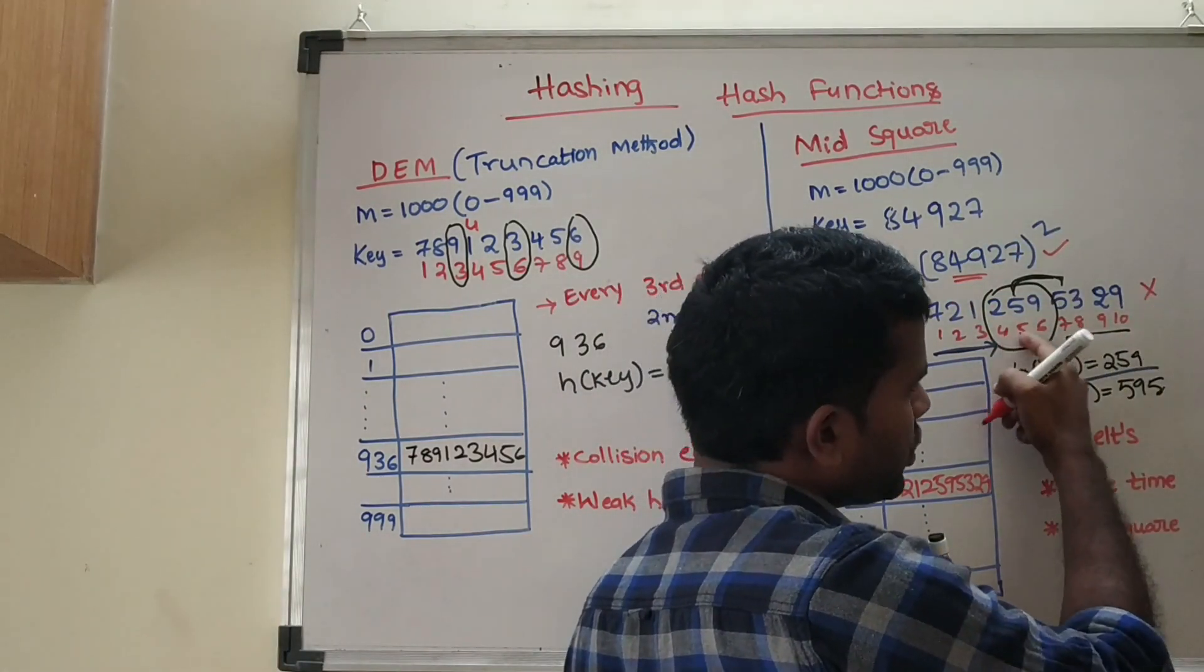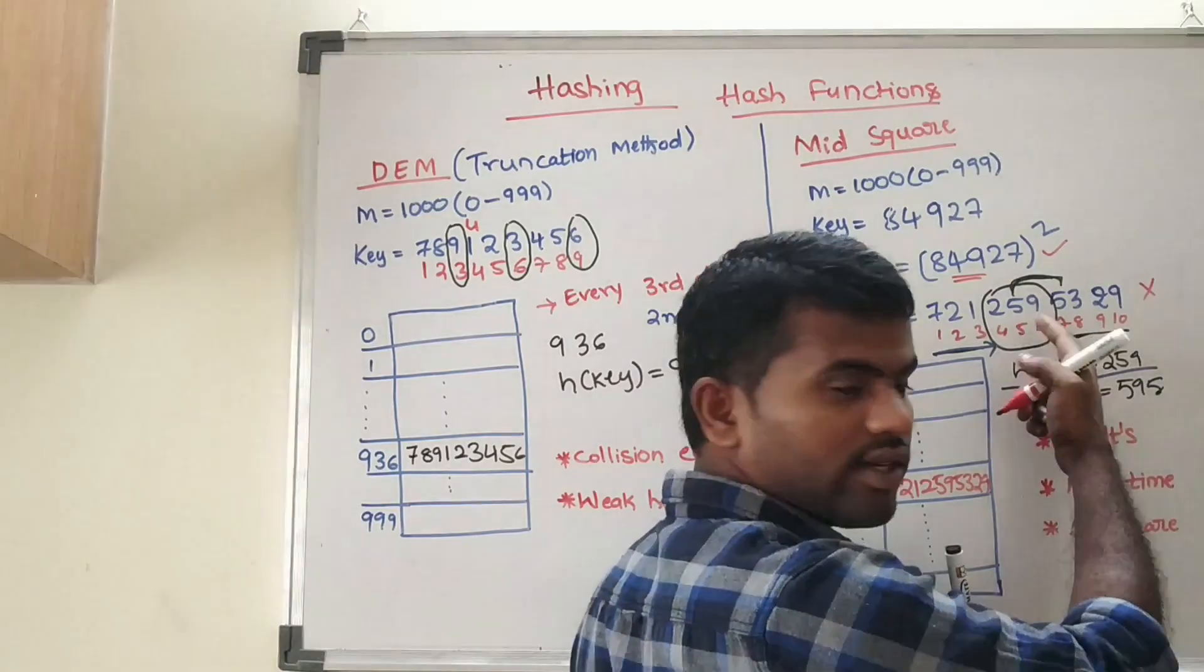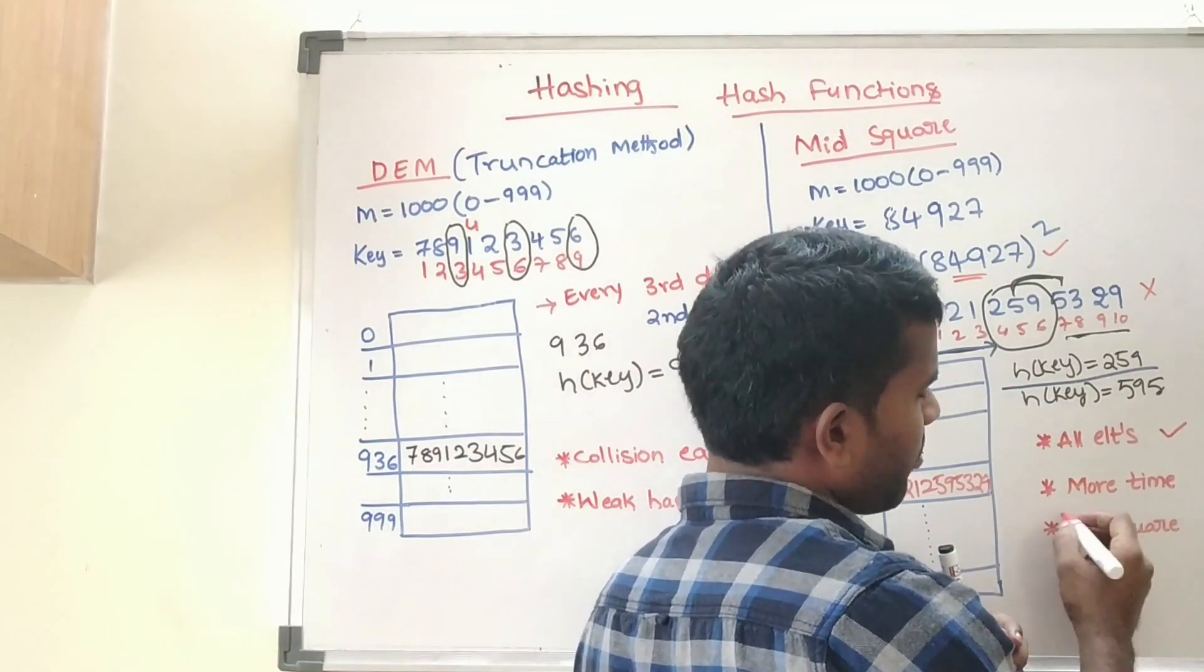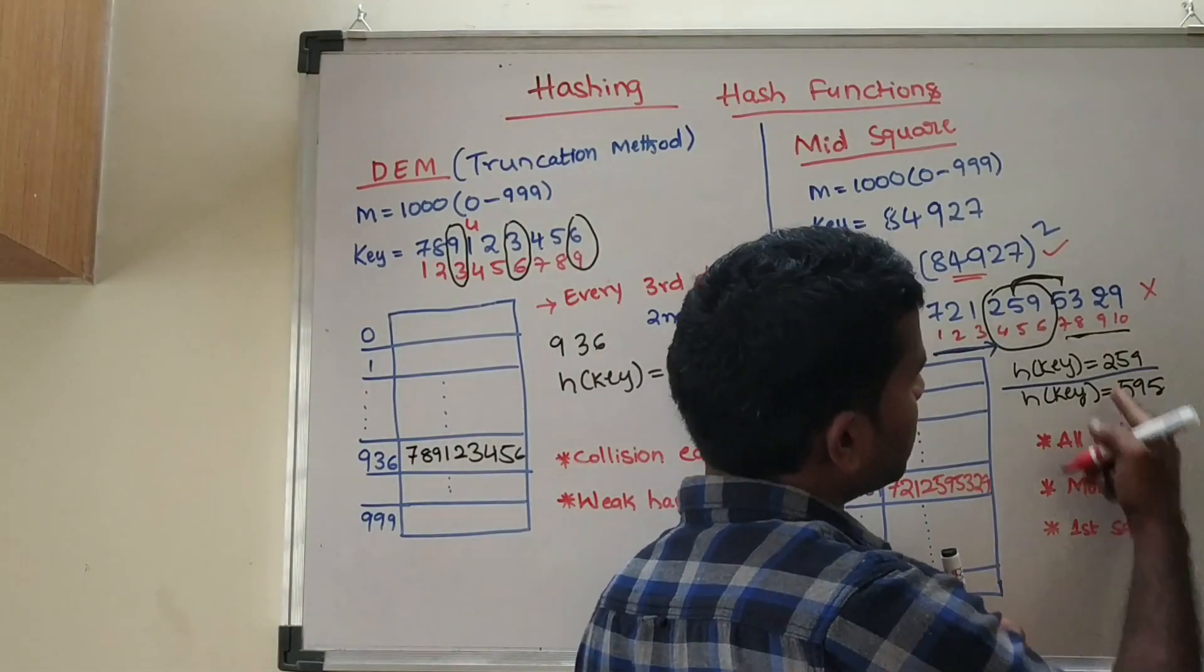Positions are fixed but the number is not fixed. All elements participate, but it will take more time because you are multiplying large numbers.